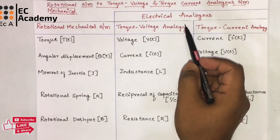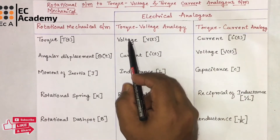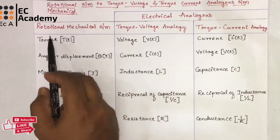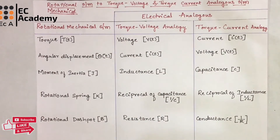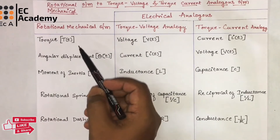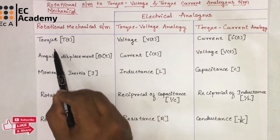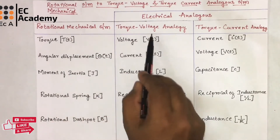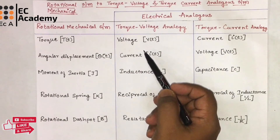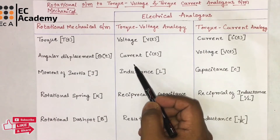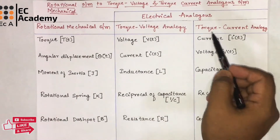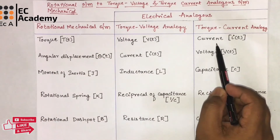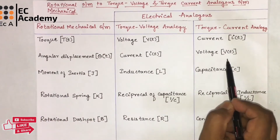In electrical analogous system, there are two types: torque voltage analogy and torque current analogy with respect to rotational mechanical system. In a rotational mechanical system, input will be torque and output will be angular displacement. In torque voltage analogous system, input will be voltage and output will be current. And in torque current analogous system, current will be input and voltage will be the output.